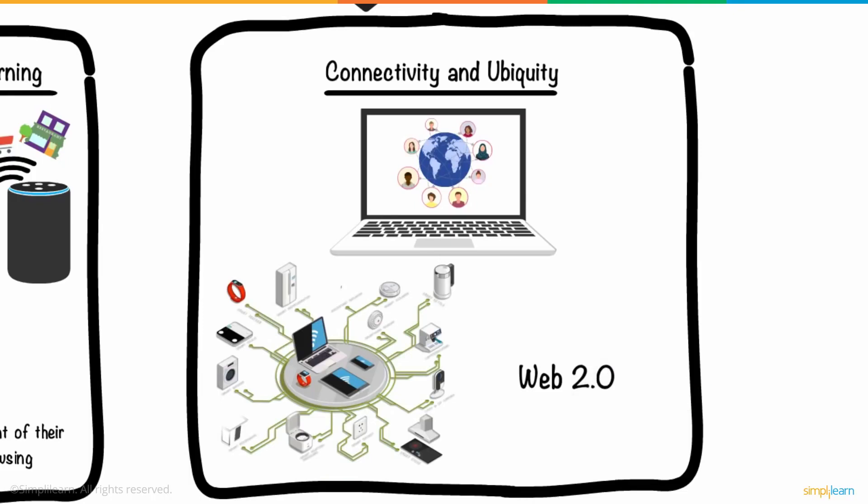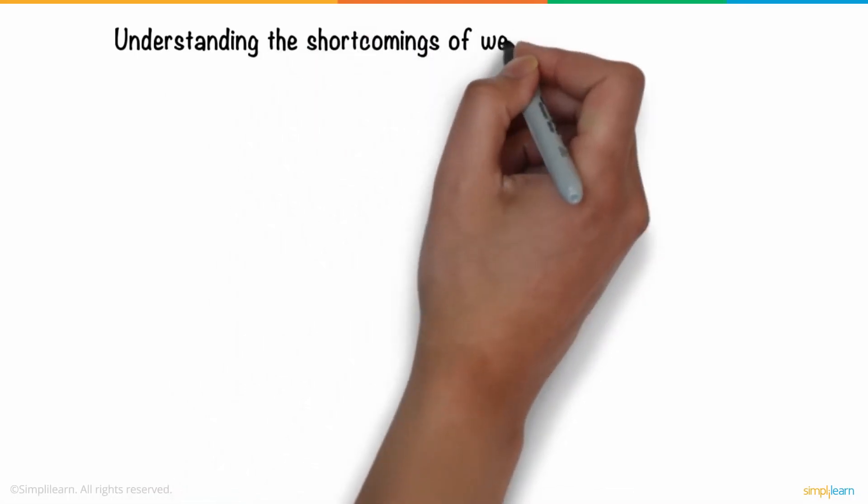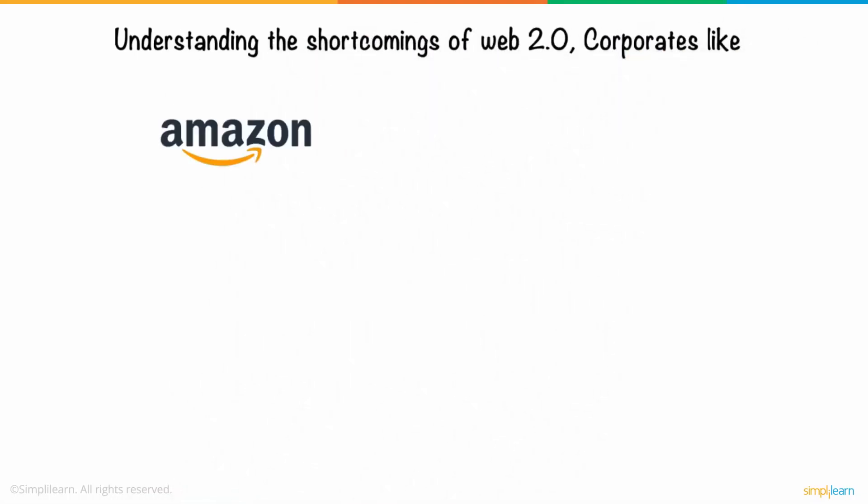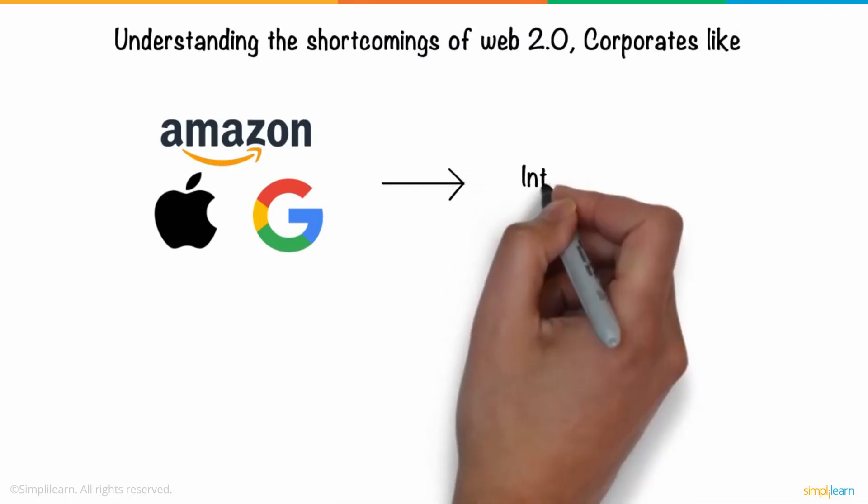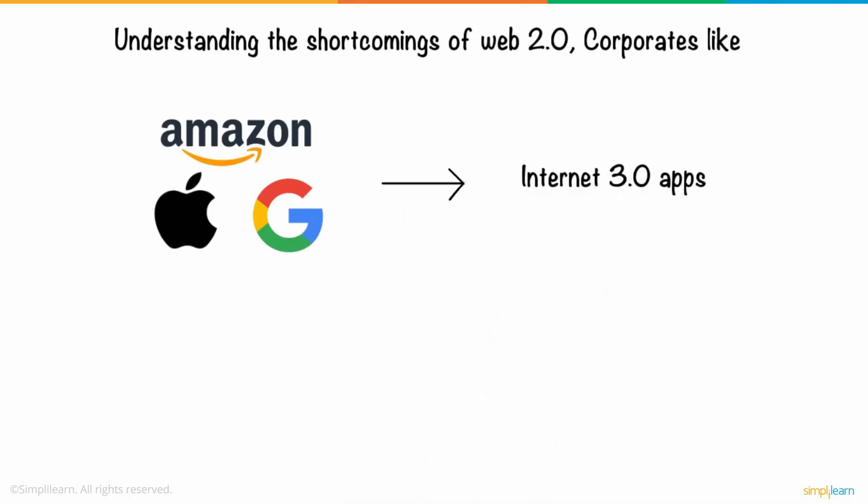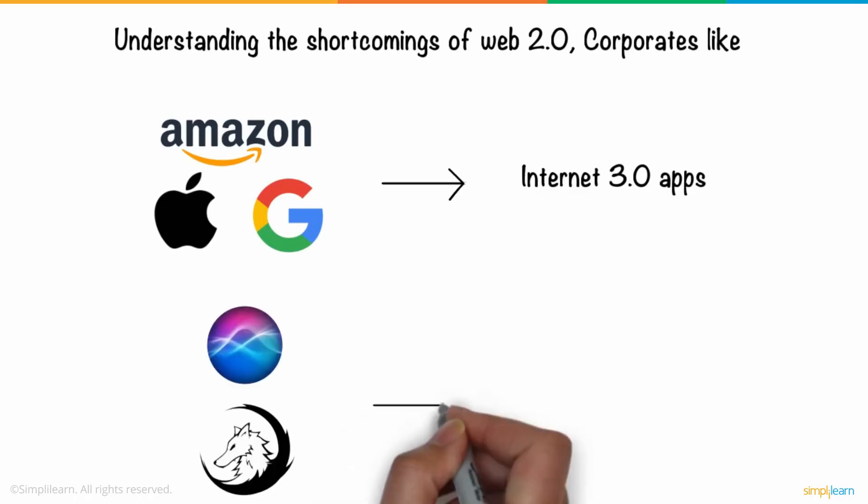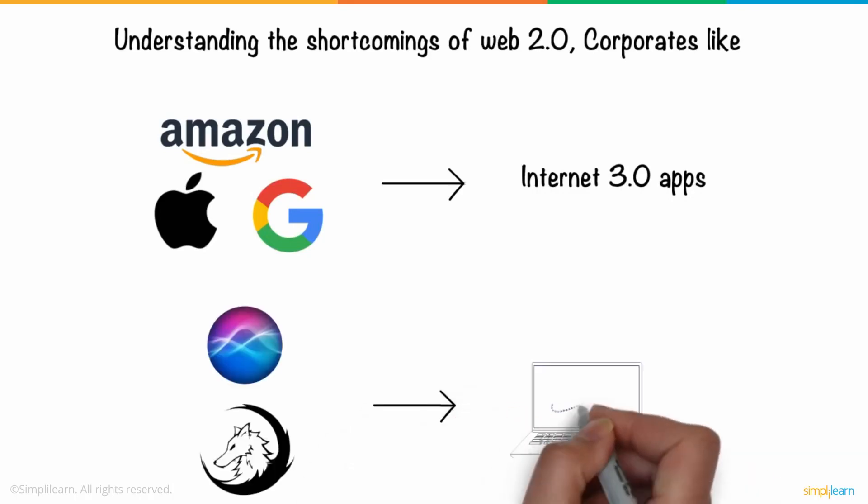Understanding the shortcomings of Web 2.0, corporates like Amazon, Apple, and Google are transforming their existing services into Internet 3.0 apps that abide by these four principles. Siri and Wolfram Alpha are two applications that use Web 3.0 features.